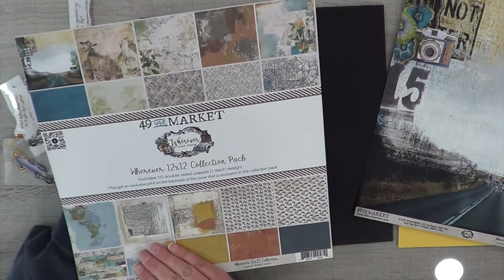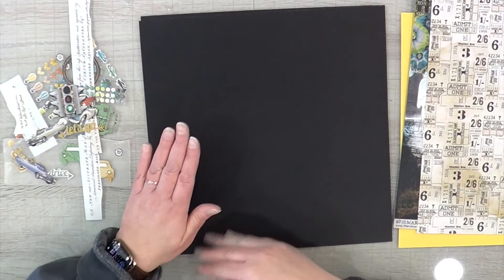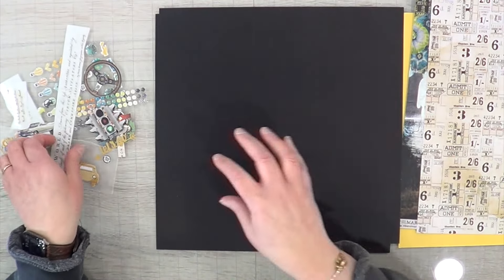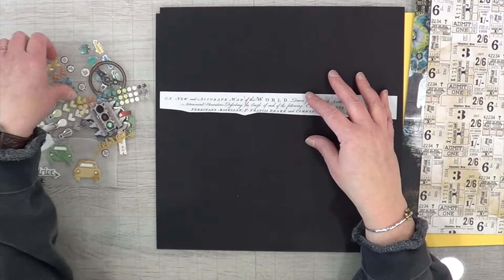So just sharing with you guys that it was the back side of the packaging that I'm going to be using. I'm going to be doing a double page layout on top of this black cardstock, again by Close to My Heart.